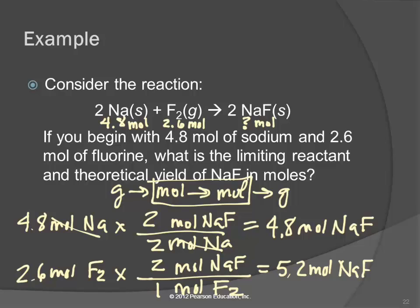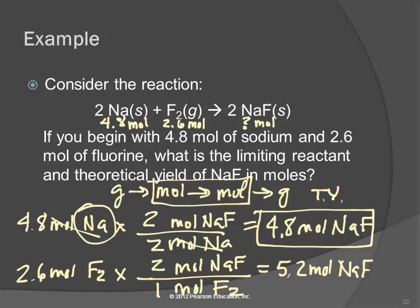We did our two equations. Now we look at our two answers and pick the smaller one: 4.8 is smaller. This is our theoretical yield. We go back and see which reactant that came from — sodium — and that's our limiting reactant. It's not enough to just do the two equations; you actually have to pick the smaller answer and identify it.